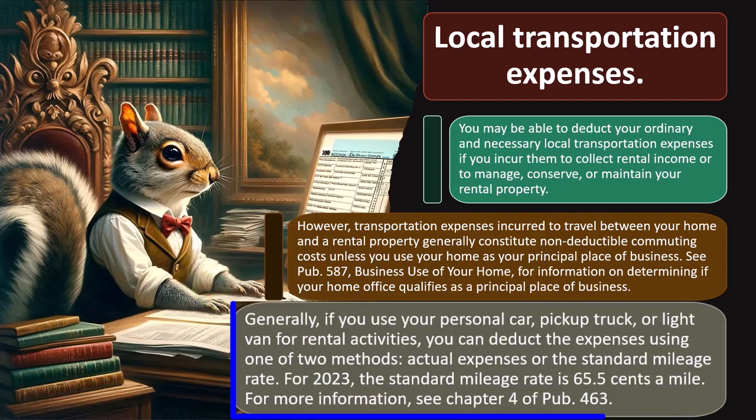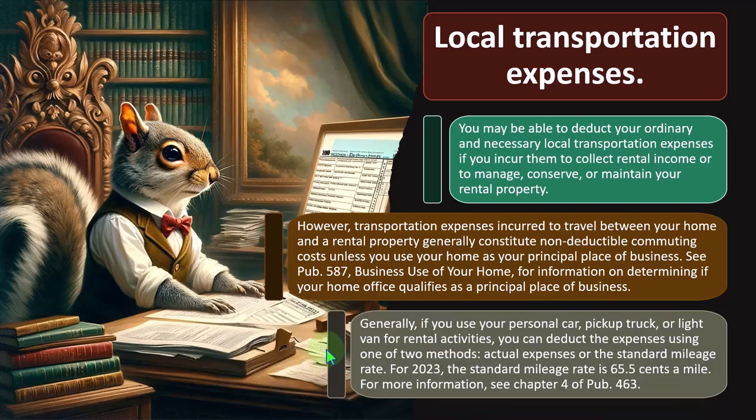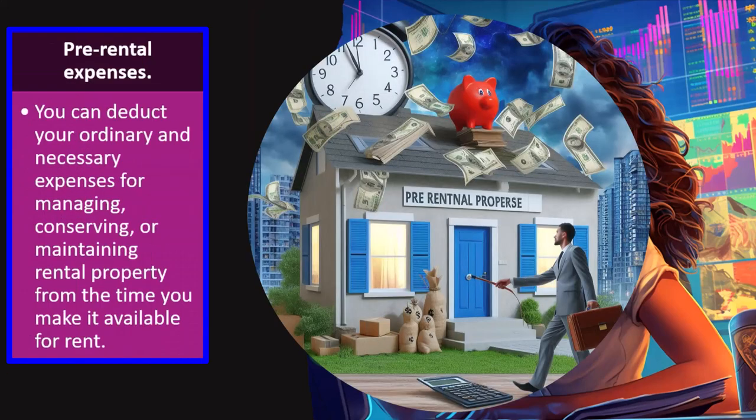For information on whether your home office qualifies as a principal place of business, see Publication 587. Generally, if you use your personal car, pickup truck, or light van for rental activities, you can deduct expenses using one of two methods: actual expenses or the standard mileage rate — just like with Schedule C. For 2023, the standard mileage rate is 65.5 cents per mile. See chapter four of Publication 463 for more information.